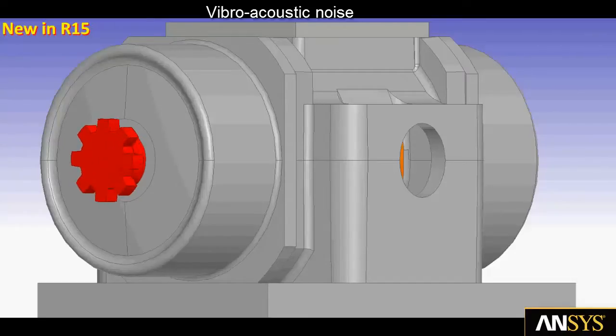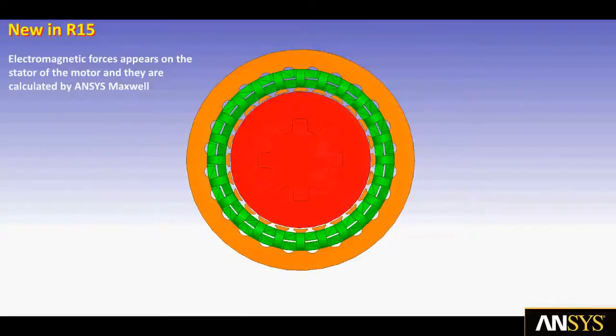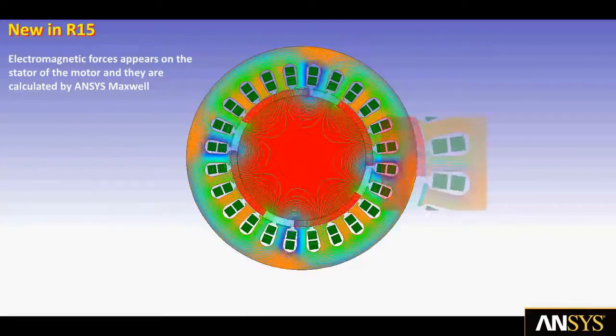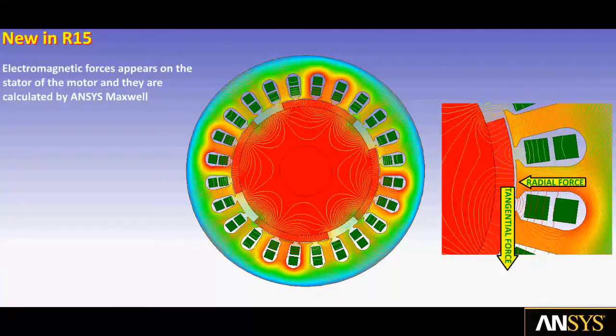The final analysis we will demonstrate is vibro-acoustic noise of the electric motor. Electromagnetic forces on the motor stator are computed by Maxwell. The result is a collection of radial and tangential forces that can deflect the stator and cause harmonic motion that induces the acoustic noise.